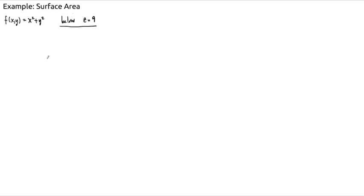So let's start by sketching this graph. By the way, this is of course Z equals X squared plus Y squared. So we know that the graph of this function is a paraboloid. It opens upward. Its vertex is at the origin in three-dimensional space.